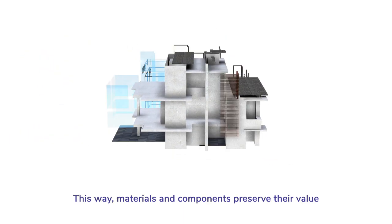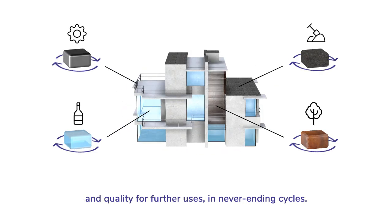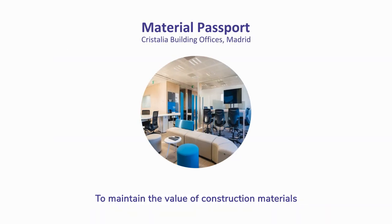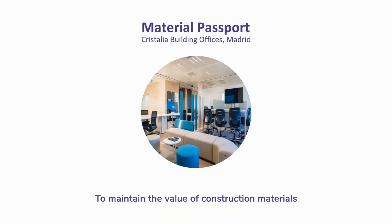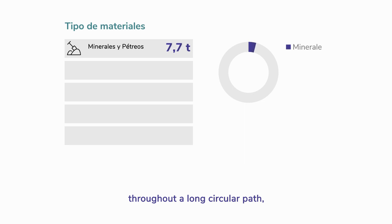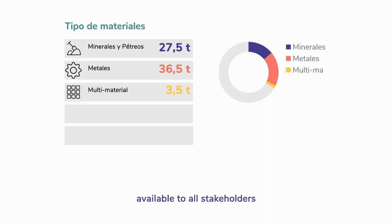This way, materials and components preserve their value and quality for further uses in never-ending cycles. To maintain the value of construction materials throughout a long, circular path, they need an identification document with their complete profile, available to all stakeholders anytime.